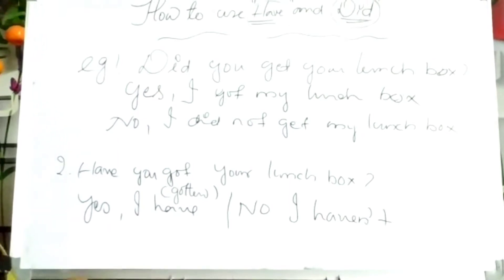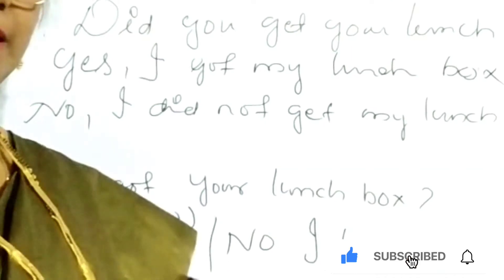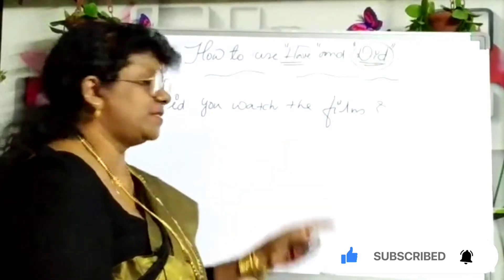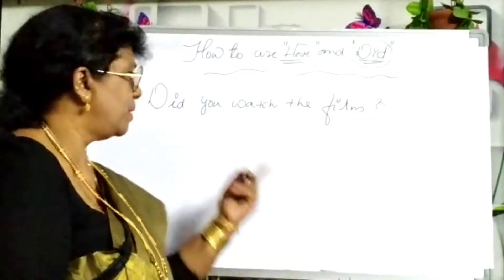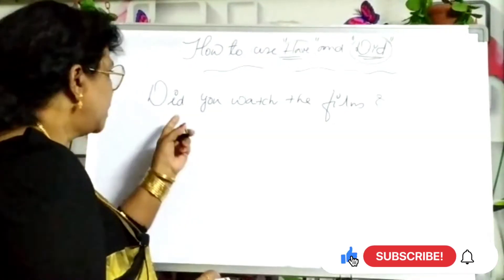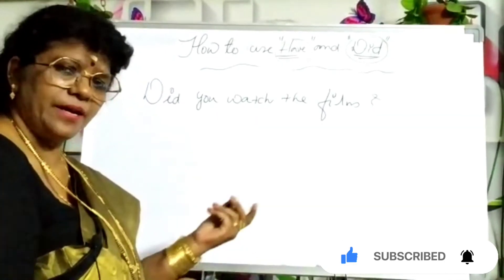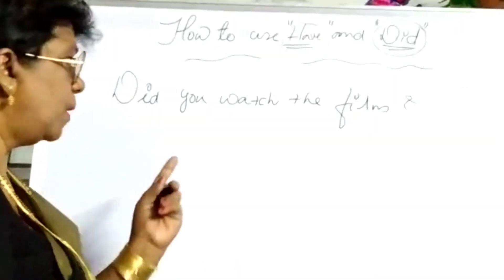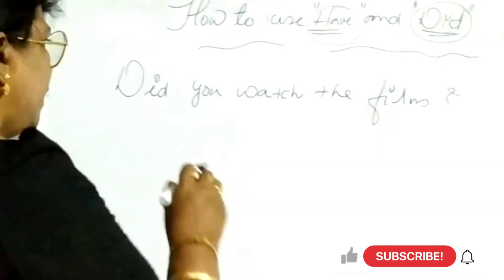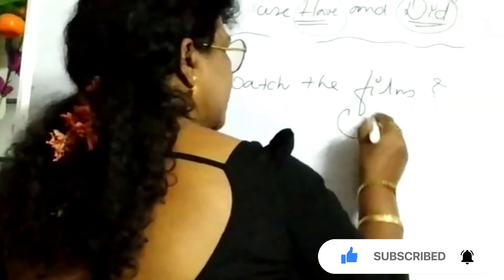Clear — so this is the difference between 'have' and 'did.' Now another example: 'Did you watch the film?' When asked using 'did', you can reply: 'Yes, I watched the film' or 'I did not watch the film.' Whenever you use 'did', that shows past actions.